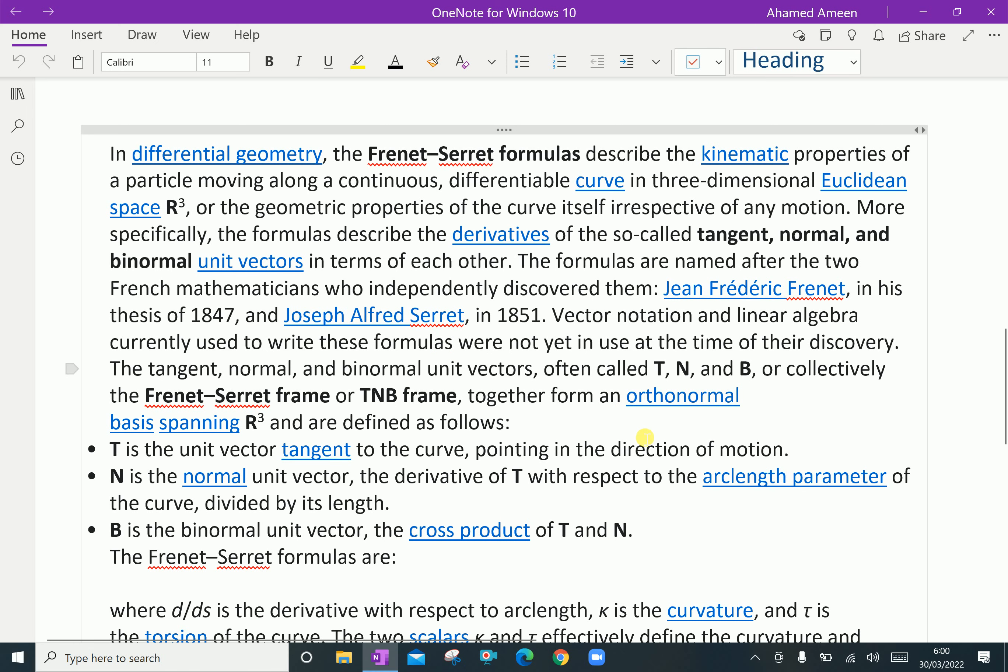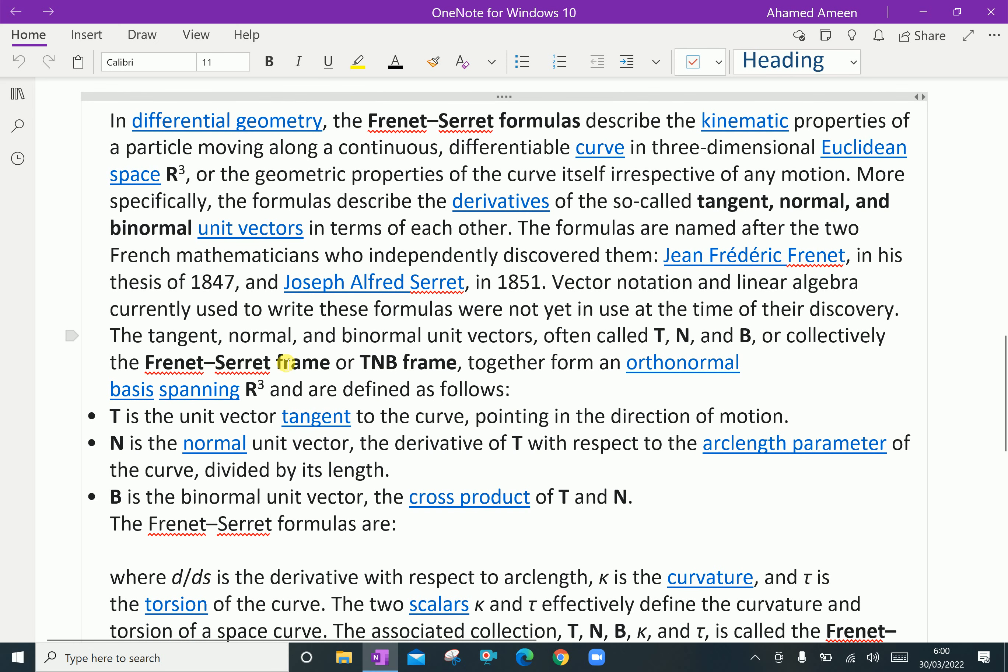The tangent, normal, and binormal unit vectors, often called T, N and B, are collectively the Frenet-Serret frame or TNB frame. Together they form an orthogonal basis spanning R³ and are defined as follows.